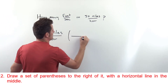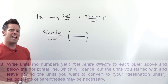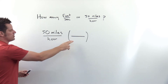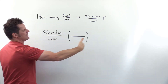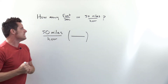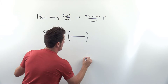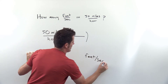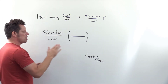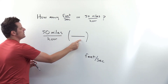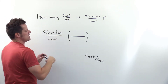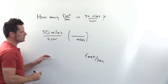Step two: write down a set of parentheses to the right of the term we just wrote down. Step three: focus on units only and write down units that will cancel out the starting units and get us to our destination units — feet per second. My strategy is to put units in the denominator of the next parentheses that cancel the numerator units of the previous term. The numerator units are miles, so the denominator here will have miles.